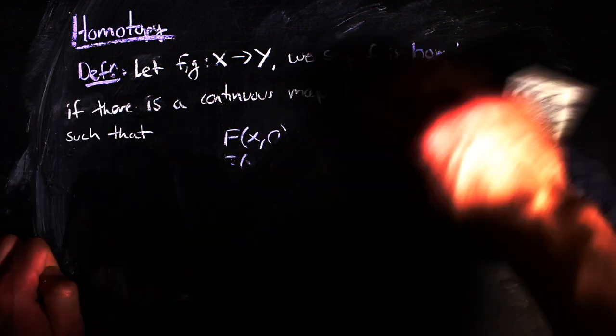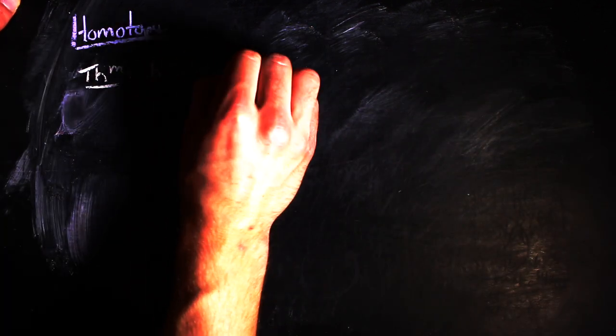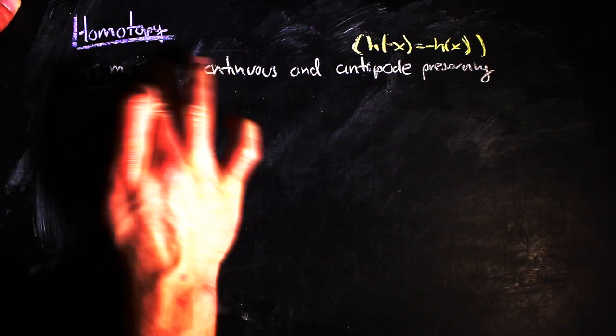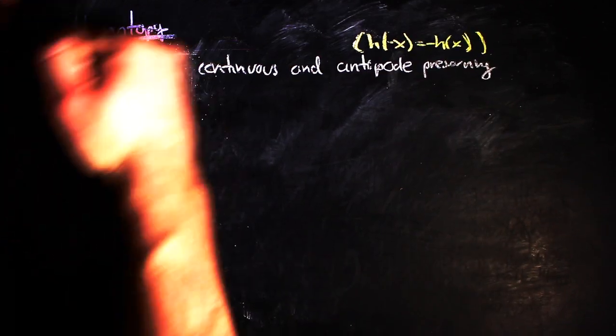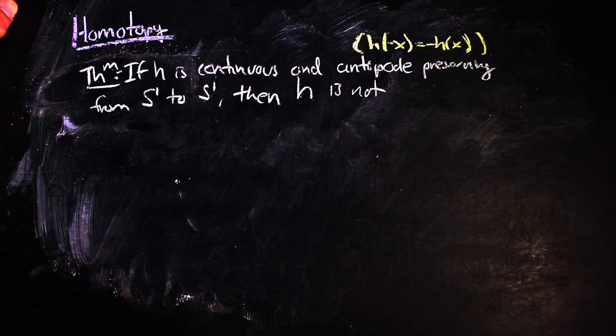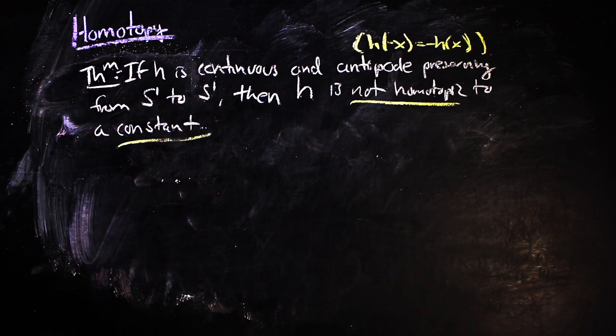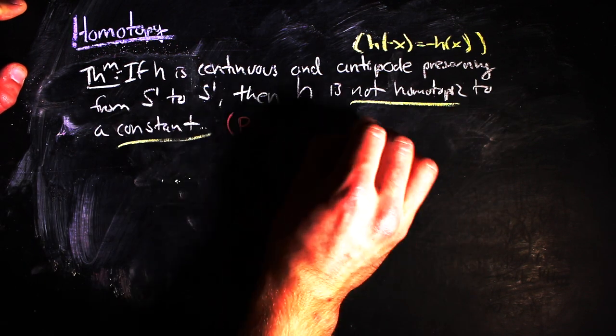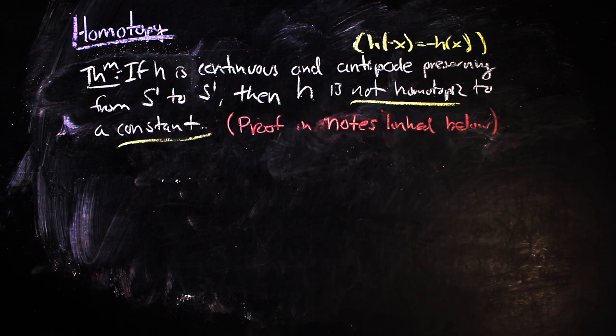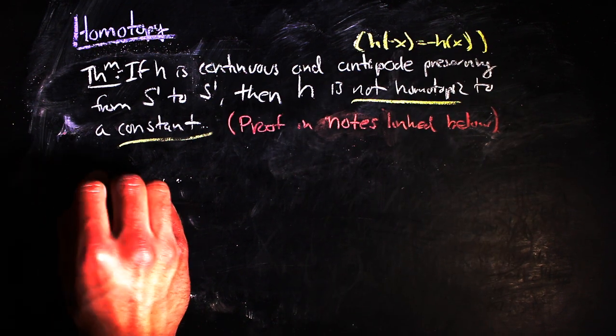Using the square map and this idea about loops, one can prove the following theorem. If you have a continuous and antipodal preserving map from the circle to itself, you cannot have a homotopy from that map to a constant map. The proof of this theorem is in the notes for this video, which are linked in the description below. Using this fact, we can prove the following theorem.